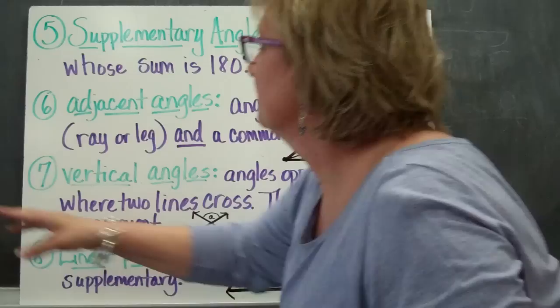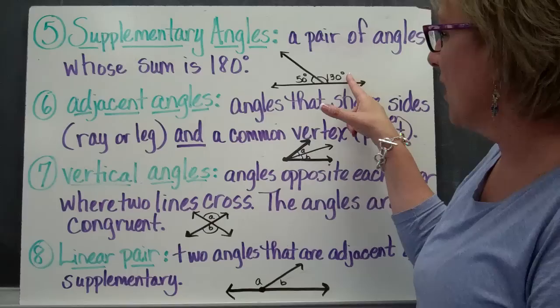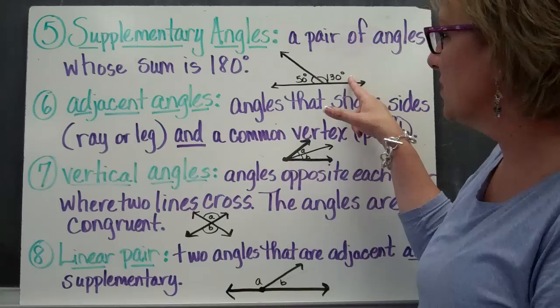Supplementary angles are a pair of angles whose sum is 180 degrees, or they will add together to make a straight line. So if I have 50 degrees on this side, the other angle has got to be such that this acute angle of 50 degrees added to the obtuse angle of 130 degrees equals 180 degrees.